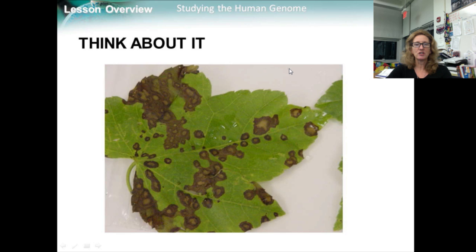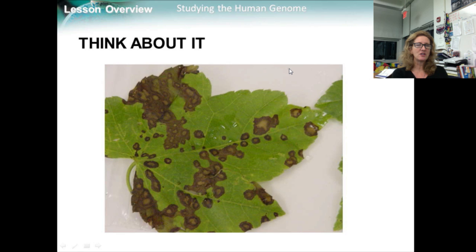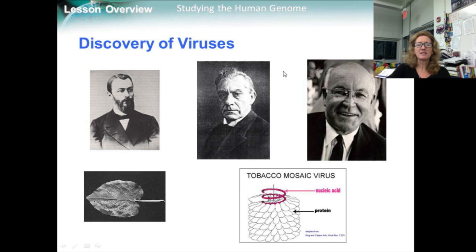Let's think about it first. Imagine that farmers have begun to lose their tobacco crops to a plant disease. To determine what is causing the disease, you take leaves from a diseased plant and crush them to produce a liquid extract. The liquid contains disease-causing agents so small they are not visible under a microscope and can pass right through a filter. What would you do next? How would you deal with the invisible? These following scientists actually addressed that issue.